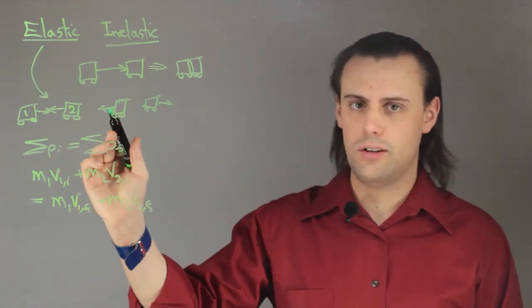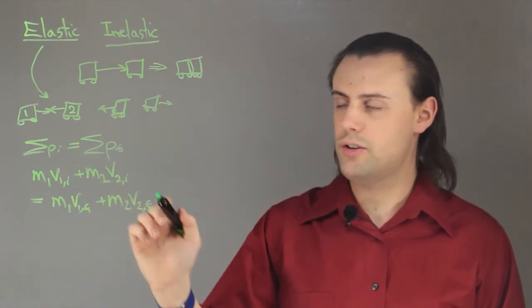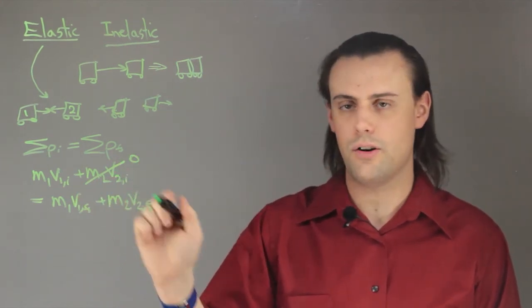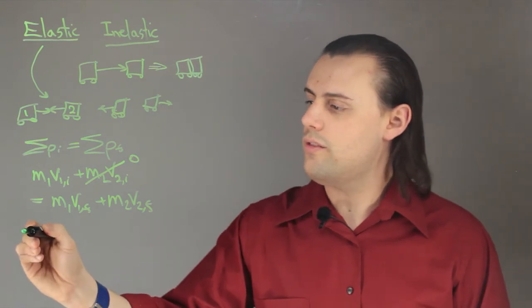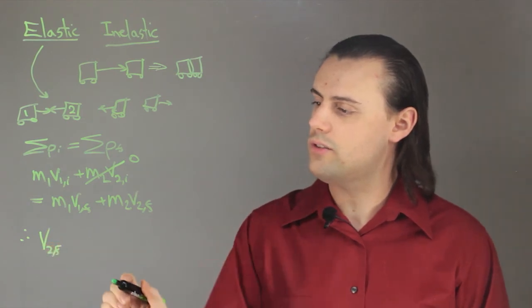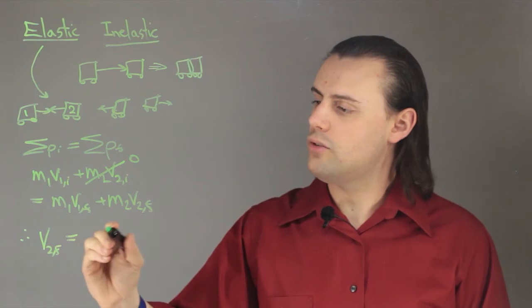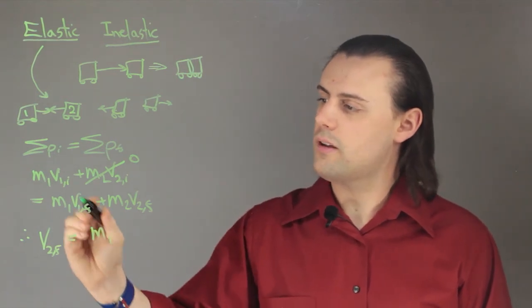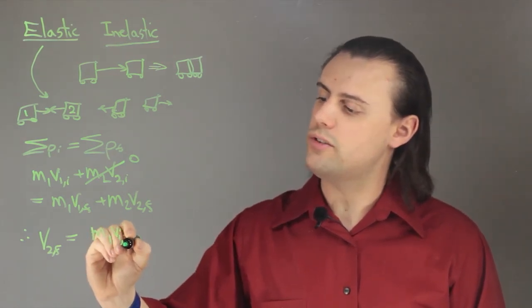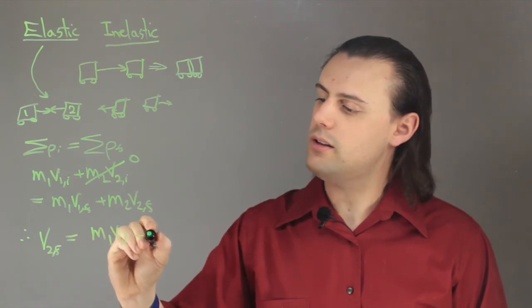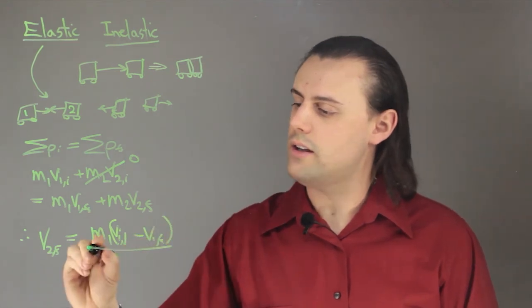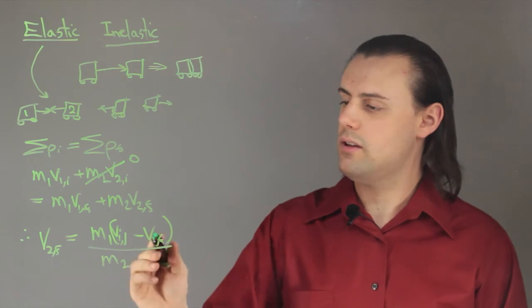So, if one of these cars is initially not moving, say car 2 is initially not moving, then this is going to be equal to zero because the velocity of car 2 is initially zero. Therefore, the final velocity of car 2, if the momentum is conserved, is going to be equal to mass of car 1 times its initial velocity minus its final velocity divided by mass 2, to use simple algebra.